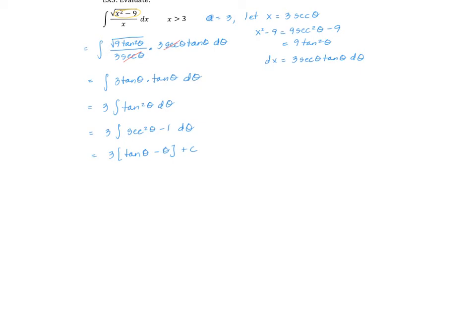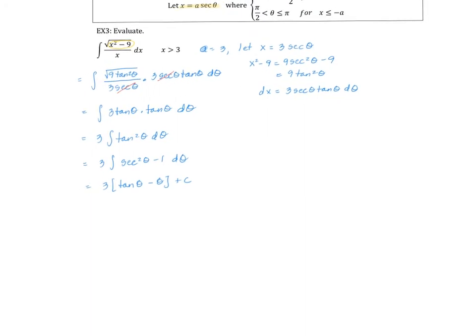I was supposed to integrate with respect to x, and now I have these thetas, so I'm going to drop a right triangle and use the fact that x is three secant theta, which gives me x over three is equal to secant theta. On the right triangle with respect to angle theta, secant is hypotenuse over adjacent — so it's x over three. The remaining side should be the square root of x squared minus nine, which was exactly what we had in our original integrand underneath the square root.